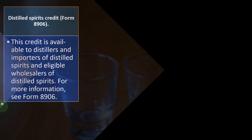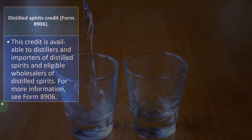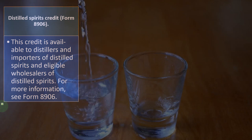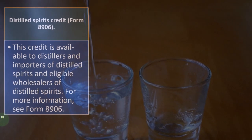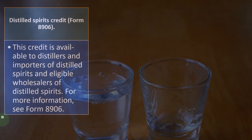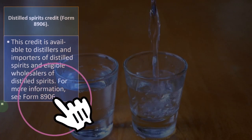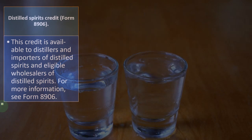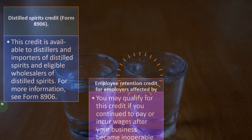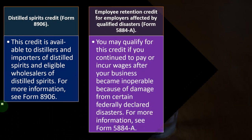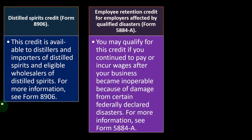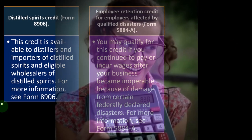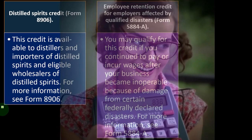The Distilled Spirits Credit is on Form 8906. This credit is available to distillers and importers of distilled spirits and eligible wholesalers of distilled spirits. For more information, see Form 8906.